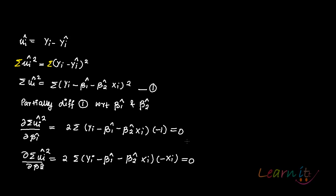Now let us simplify these two equations. You can cancel the 2 and the minus sign on both sides, since they go to the zero side. What you will be getting is: summation of (yi minus beta1-hat minus beta2-hat·xi) equal to 0.